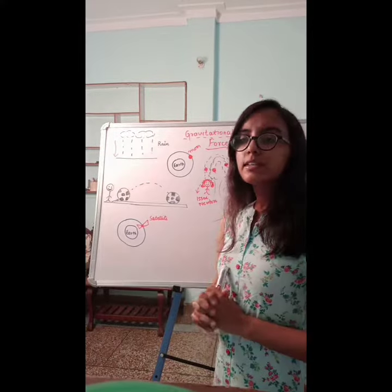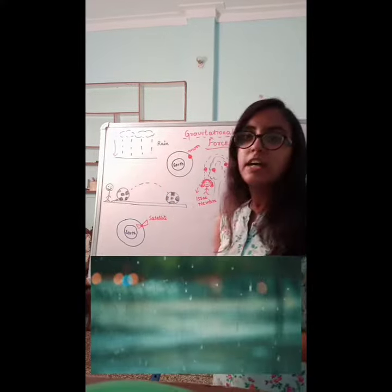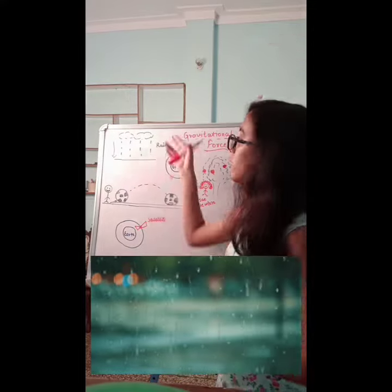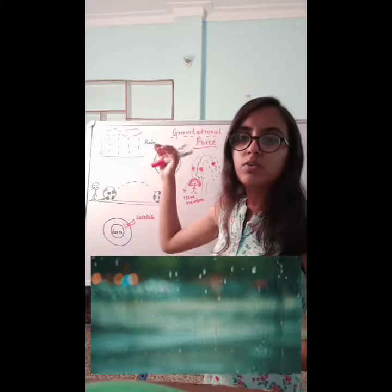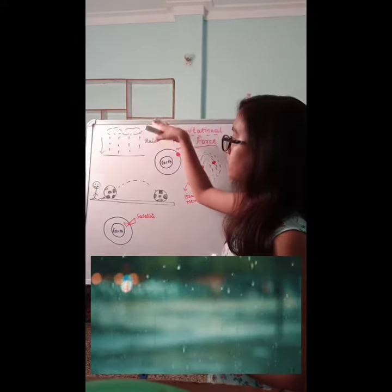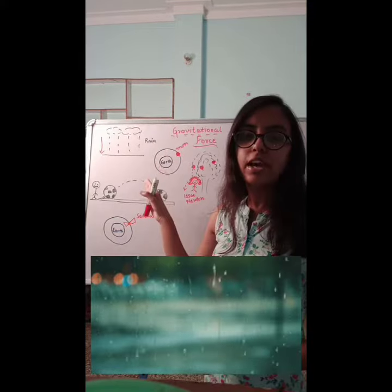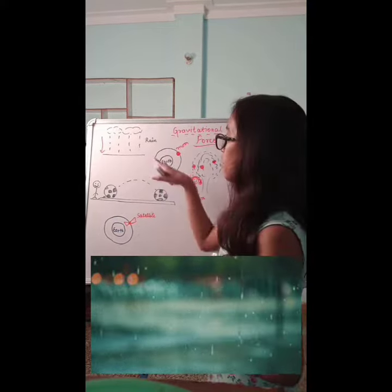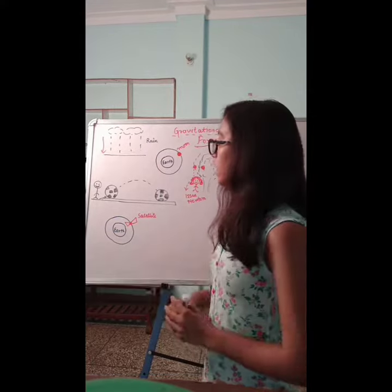Another phenomenon we will discuss is rain. As we all know, rain falls from up above the clouds and comes downwards and falls on the ground. So the direction of rain is downwards.